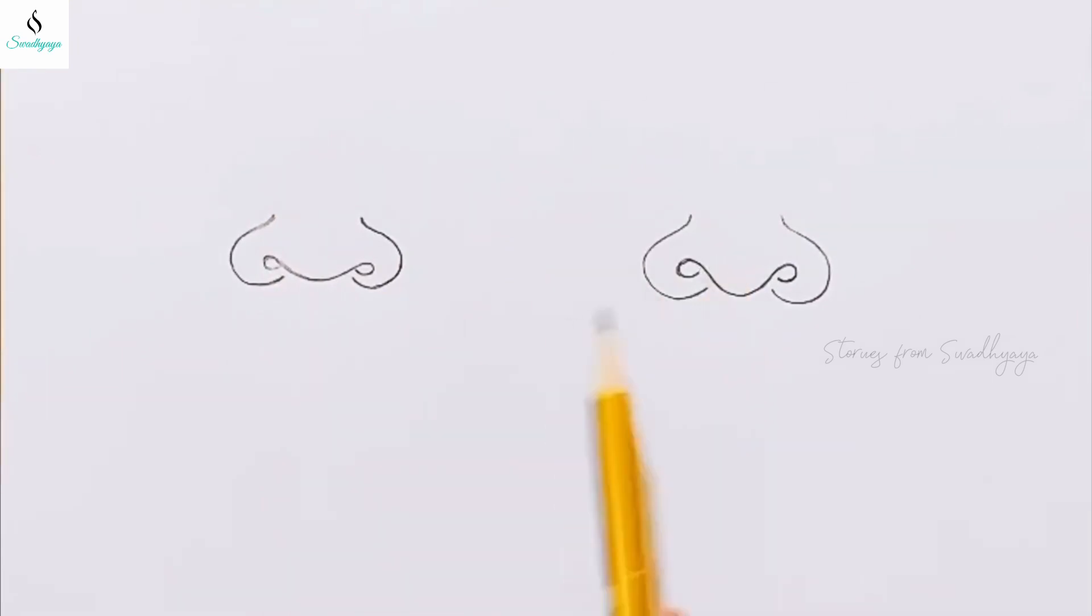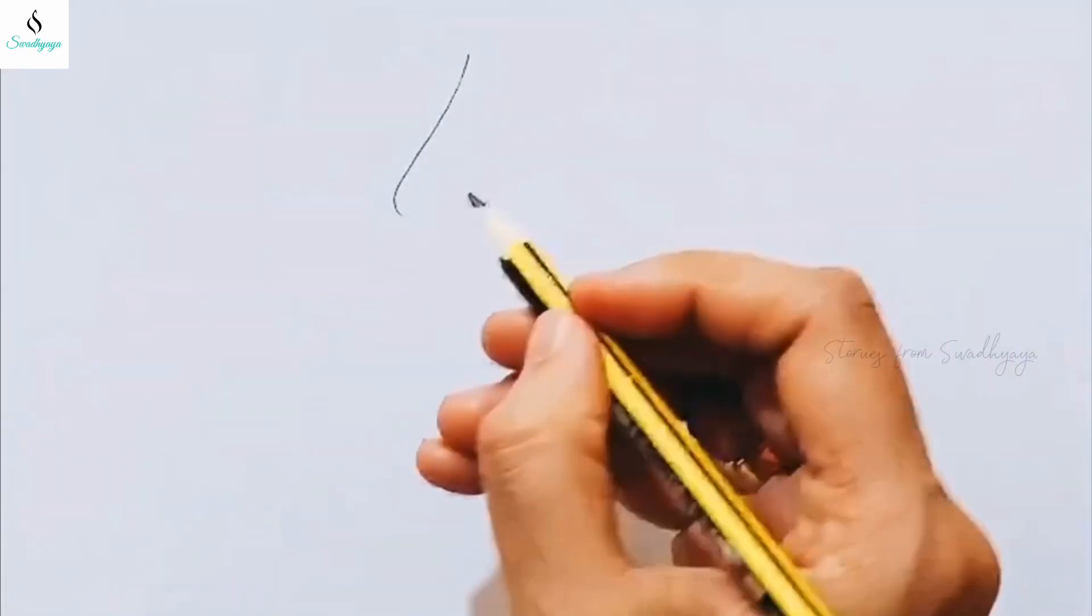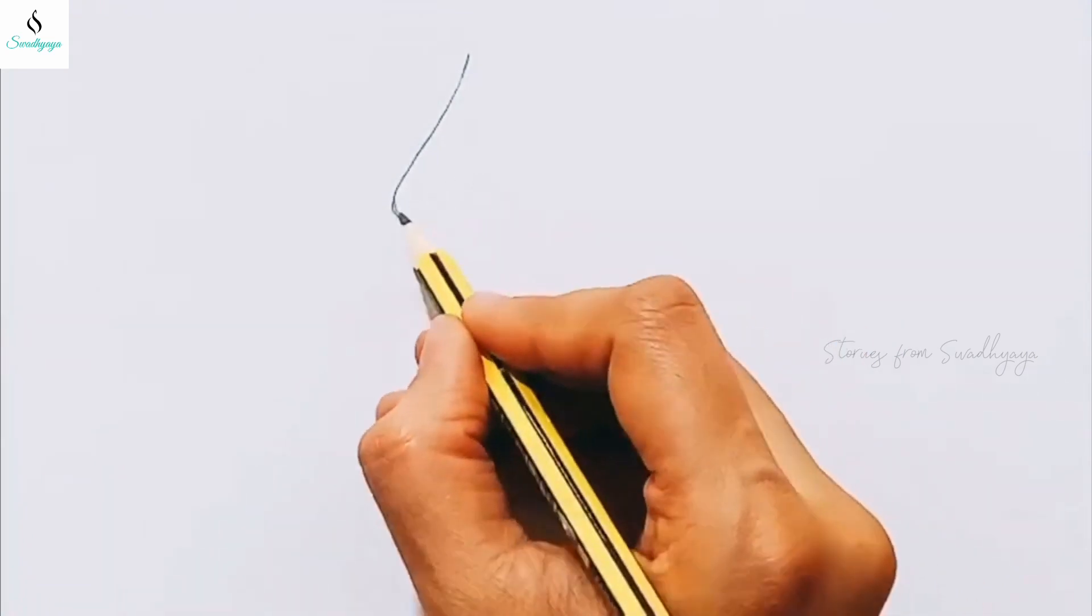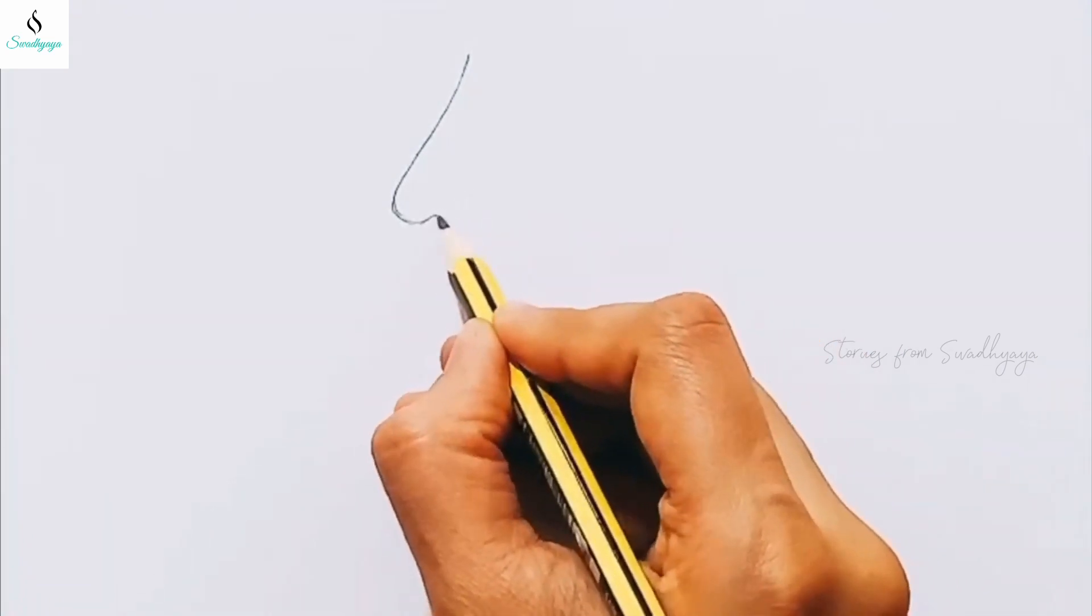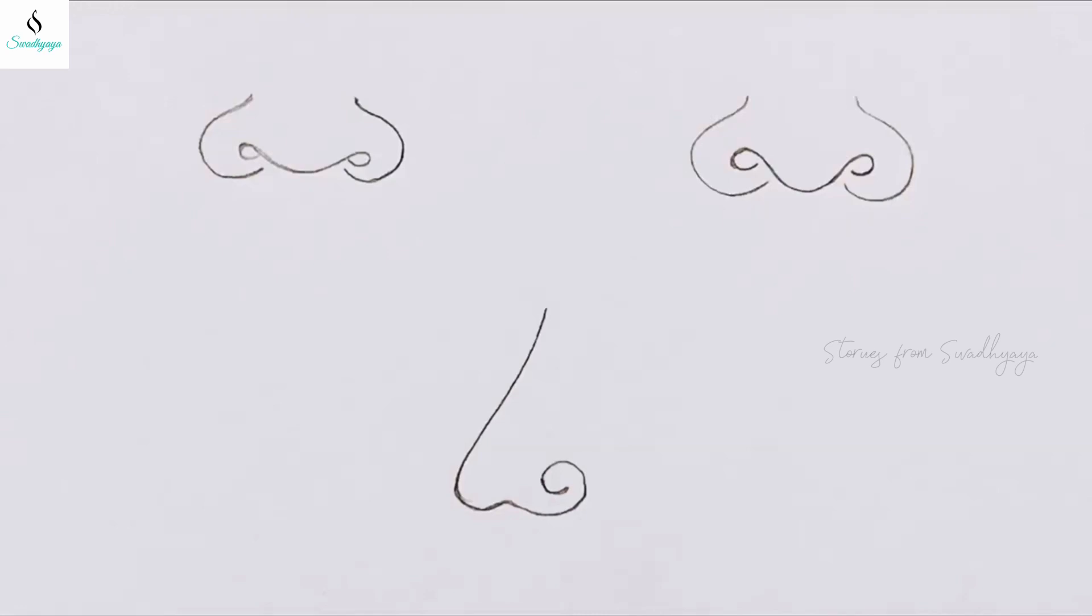The third type of nose we have shown here is for the side angle. When you see a Kerala mural painting there are going to be deities that you see from the side angle, so this nose is used for the side angle.